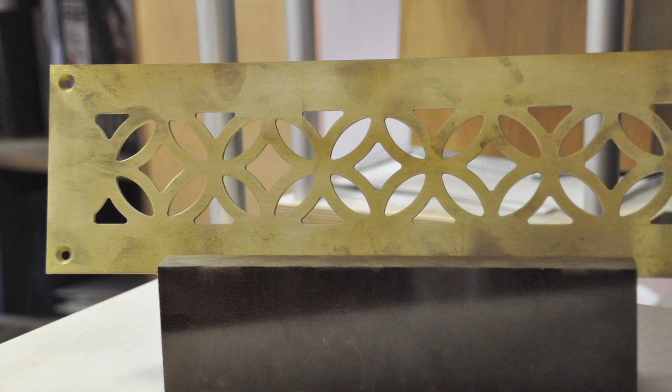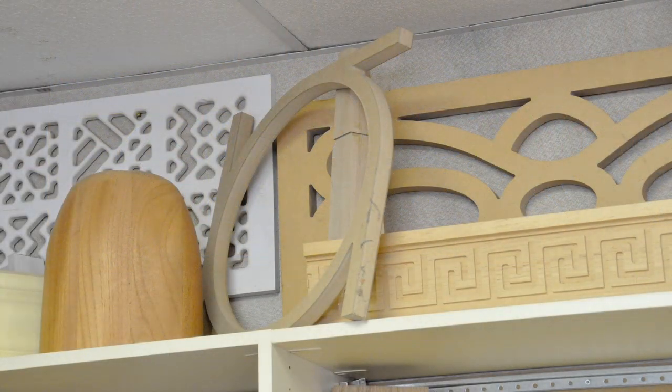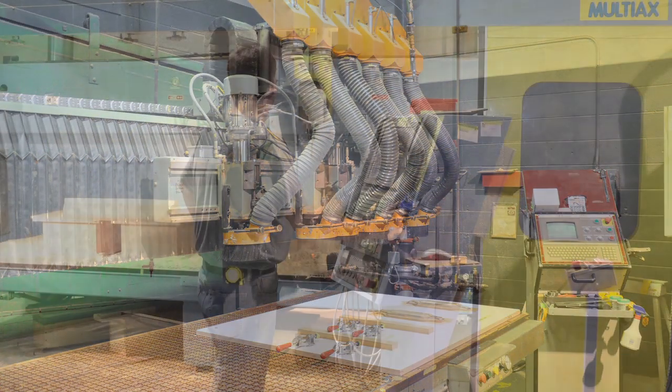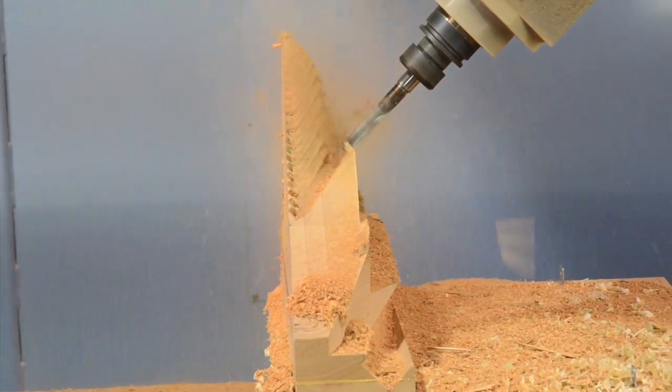We run five CNCs, everything from a basic three-axis machine with a four-by-eight table up to a full five-axis with six by twelve with four feet of Z, so we can run the gamut machine-wise.